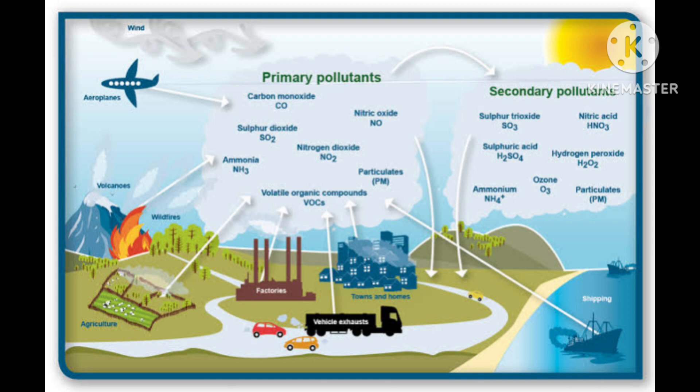Now, photochemical smog. Photochemical smog occurs in warm, dry and sunny climate — just the reverse of classical smog, which occurs in cool, humid climate. Here sunlight must be present.